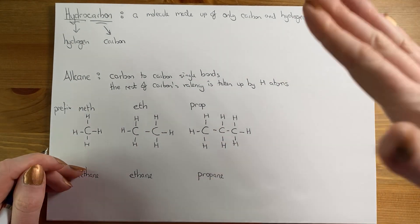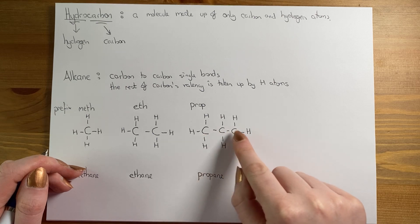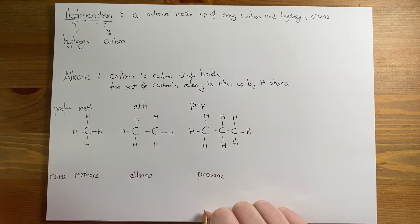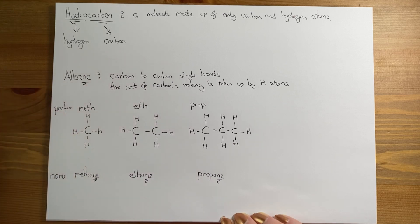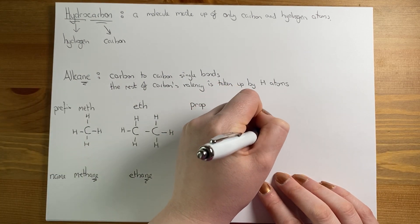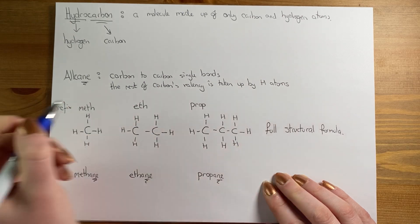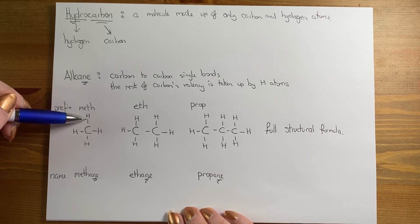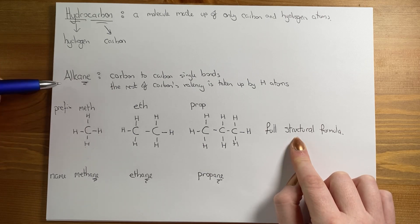We continue using the prefixes from one to eight. If I wanted octane, 'oct' is eight — I would have eight carbons in a row with bonds between them, and then fill all of those carbon valencies with hydrogen atoms. The names come from the name of the family — these are the alkanes. This is how we draw full structural formula.